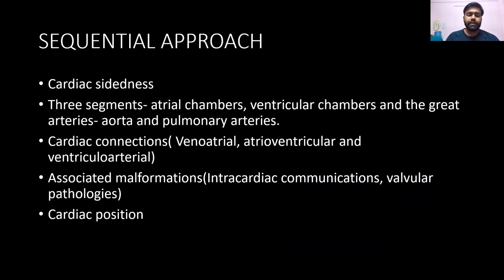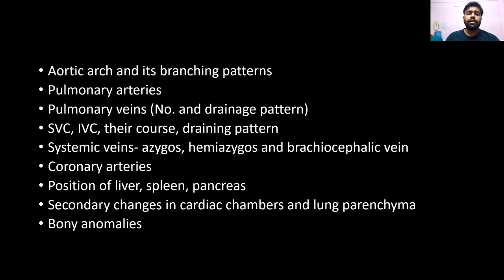The images were studied in a sequential approach by establishing cardiac sidedness, the atrial chambers, ventricular chambers, great arteries, aorta, and pulmonary arteries. Cardiac connections were established, and associated malformations like intracardiac communication and valvular pathologies were studied. Cardiac position was determined, along with aortic arch and branching patterns, pulmonary artery and veins, SVC, IVC and their drainage pattern, systemic veins including azygos, hemiazygos, and brachiocephalic veins. Pulmonary artery anomalies, situs of liver, and pancreas with respect to the position of the heart, secondary changes in cardiac chambers and lung parenchyma, and any bony anomalies were also assessed.